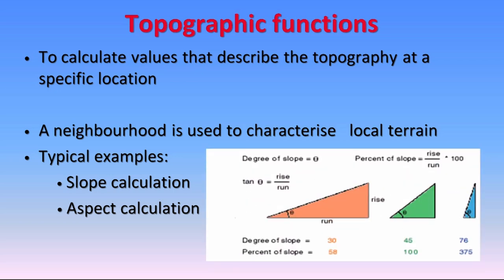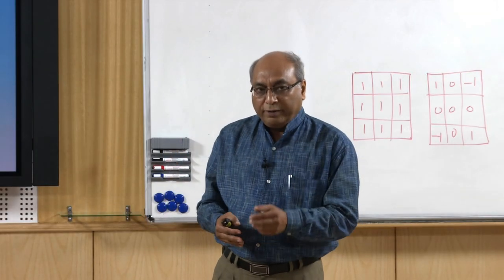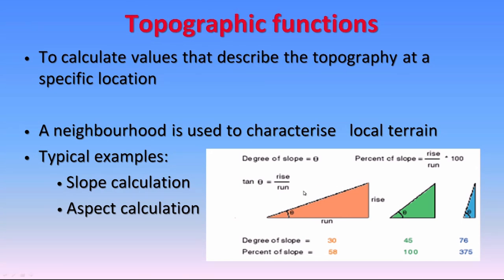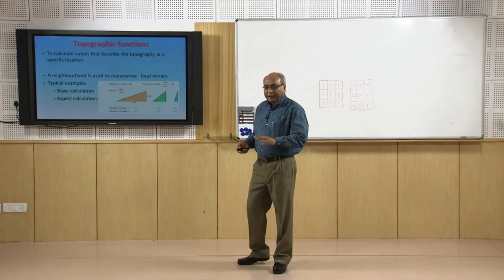Using GIS, slope can be derived in two ways: in degrees or in percentage. The concept is tan theta equals rise over run. For example, 30 degrees corresponds to 58% slope; 45 degrees corresponds to 100% slope. Degree ranges from 0 to 90 while percentage ranges from 0 to 100. Depending on requirements, you can choose either degrees or percentage, and can transform between the two. Aspect is the orientation of a slope surface with reference to north and can also be calculated. By default, the output shows aspect in 8 directions starting from north through north-northwest and so on.